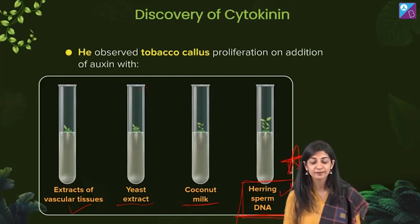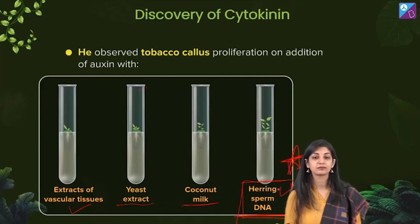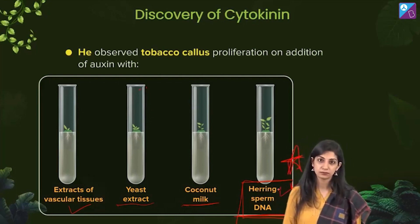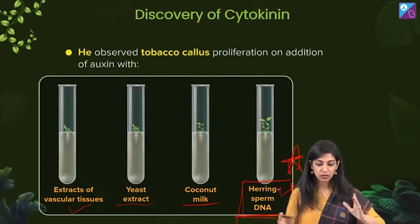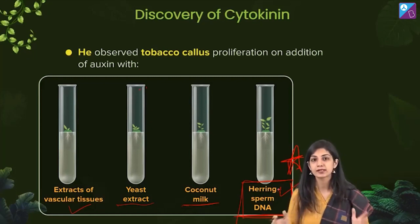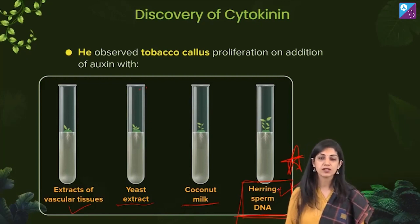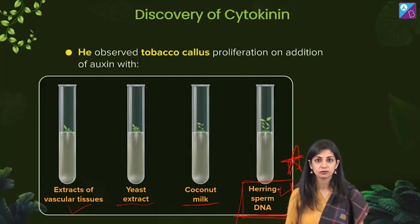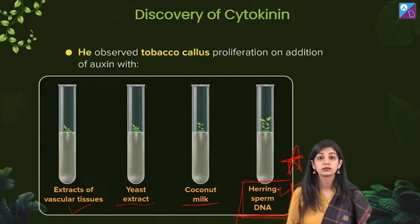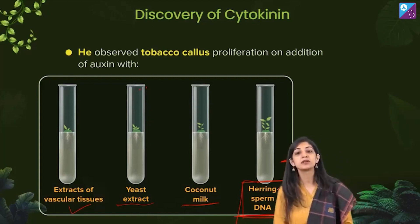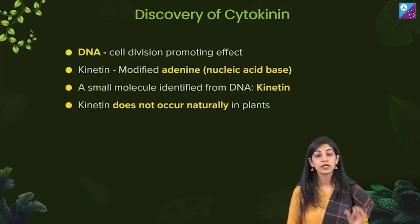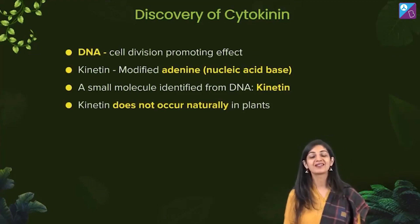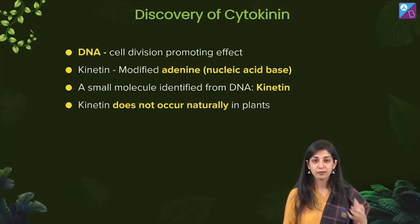In the fourth experiment — and this is important, mark it separately — he took herring sperm DNA. So to recap: he was trying to grow tobacco callus, and the four substances were: extract of vascular tissues (xylem and phloem), yeast extract, coconut milk, and herring sperm DNA. He found that the culture with herring sperm DNA had the maximum growth — maximum proliferation.